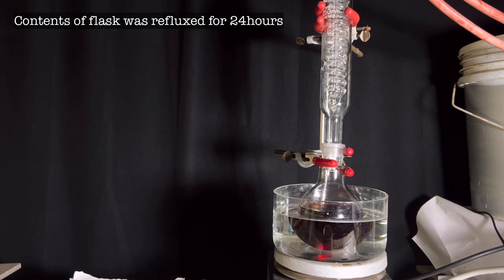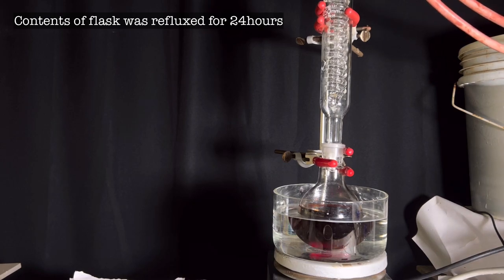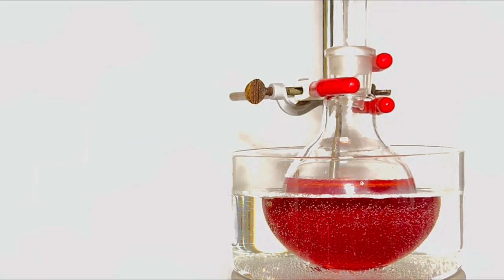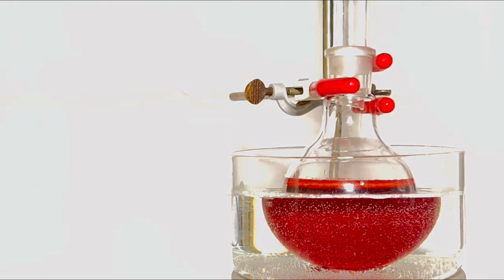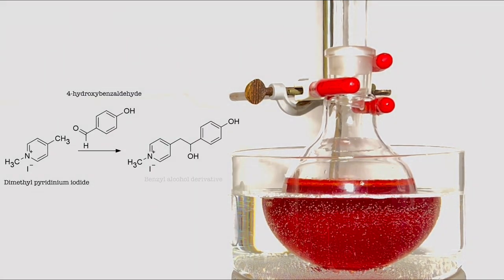The color of the contents in the round bottom flask matches with the background color making the visibility poor. So I swapped the background to a white one. Now you can appreciate the bright red color of the reaction mixture. Now we will see the second part of the reaction which is happening. Here the dimethylpyridinium iodide reacts with 4-hydroxybenzaldehyde in the presence of piperidine and ethanol to form the corresponding benzyl alcohol intermediate.